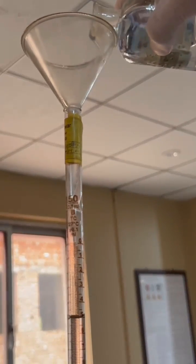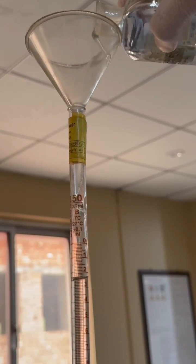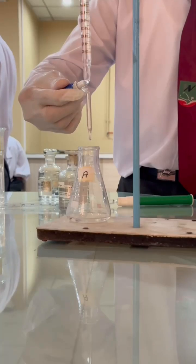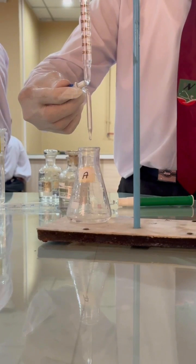Put 0.1 normal NaOH in a burette up to the mark of zero and start the process of titration.